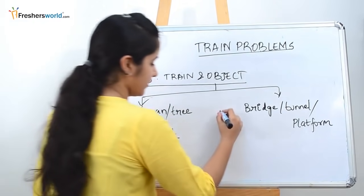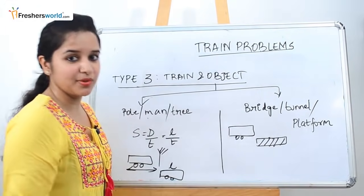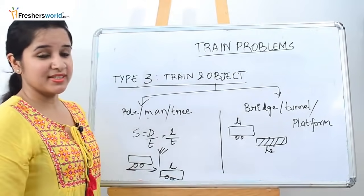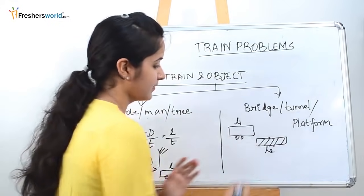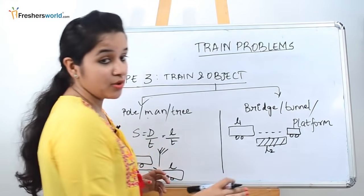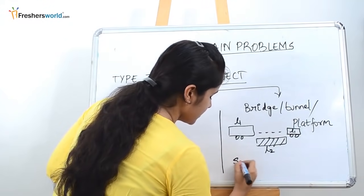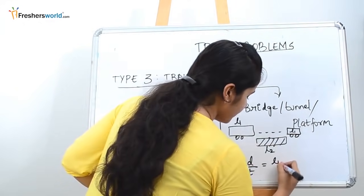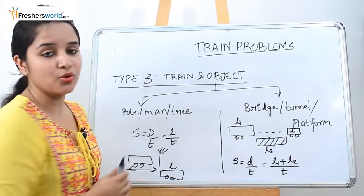For a bridge, tunnel, or platform: let the length of the train be L1 and the length of the bridge be L2. The train has completely crossed the bridge when the back end of the train clears the far end of the bridge. So the distance traveled is L1 + L2. Therefore: speed = (L1 + L2) / T. Let's solve a few problems to understand these two concepts better.